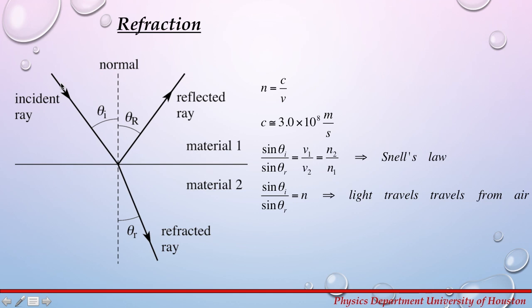Refraction is the change in direction of a wave due to a change in its speed. This change in speed is observed when a wave passes from one medium to another at any angle other than 0 and 90 degrees. Refraction of light is the most commonly observed phenomenon. In this figure, θi is the angle of incidence, θr is the angle of refraction, and then θr is also the angle of the reflected wave.